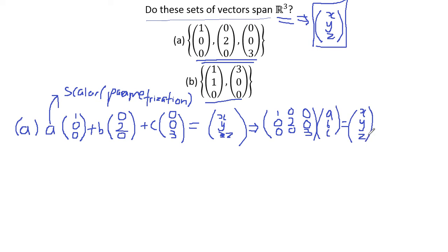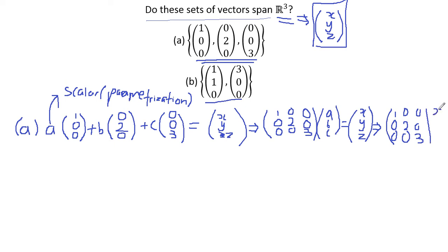We can write this again in its coefficient matrix form: [1, 0, 0; 0, 2, 0; 0, 0, 3] times [A; B; C] equals [X; Y; Z]. Our aim is to find whether A, B, and C have at least one solution, because if there is at least one solution we can say that this set of vectors spans R3.